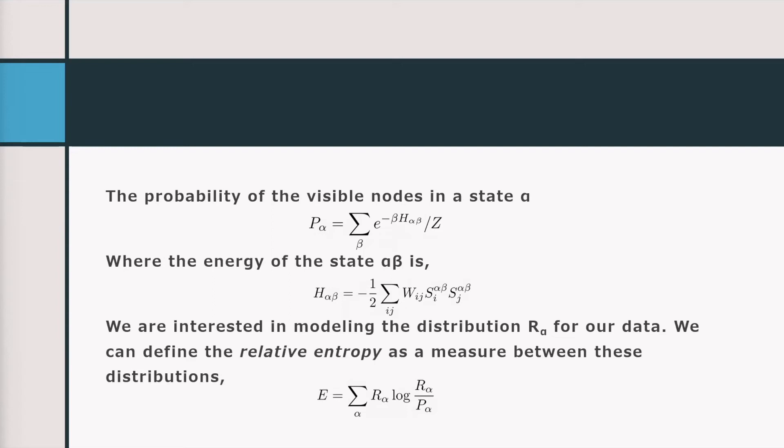There are two types of nodes: visible nodes (labeled alpha) and hidden nodes (labeled beta). Our goal is to learn the probability distribution of the training data on the visible layer. It's fairly straightforward to write down the probability for a given state of the visible vector — it looks almost exactly like statistical mechanics: a partition function where you sum over all hidden layer states, with an energy function that looks just like an Ising model, with weights and spins in a summation.